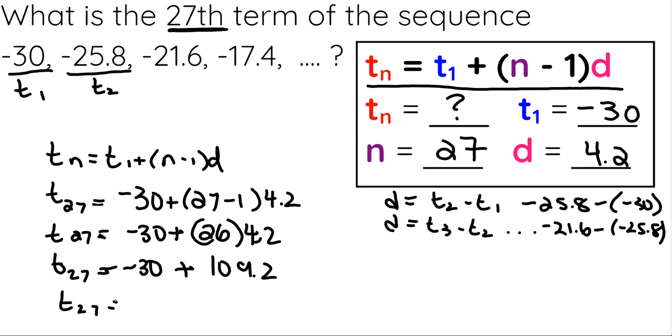And to finish it off, I just add those two together. So plus a negative 30, and I get 79.2. So the 27th term of this arithmetic sequence is 79.2.